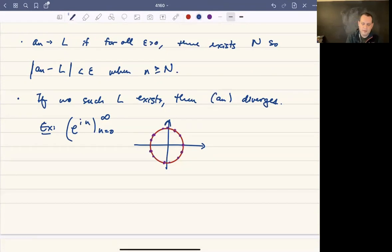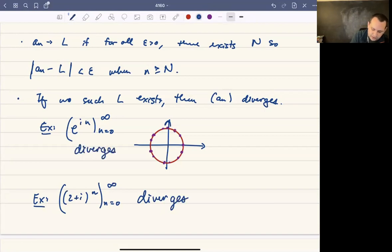It's not doing anything, so this is a divergent sequence because it doesn't have a limit. Alternatively, you could have something like (2+i)^n as n goes from zero to infinity. This also diverges.